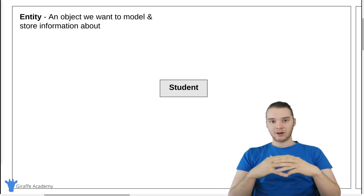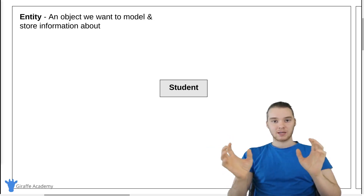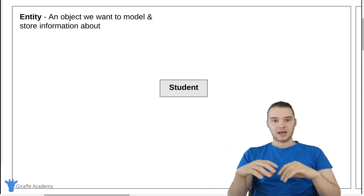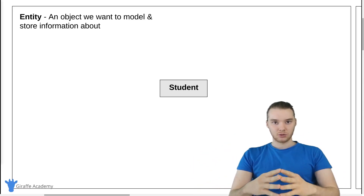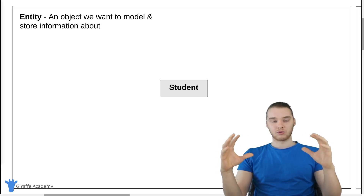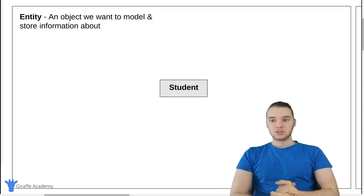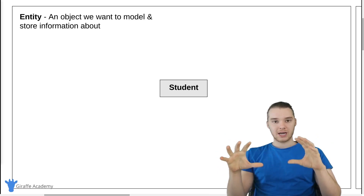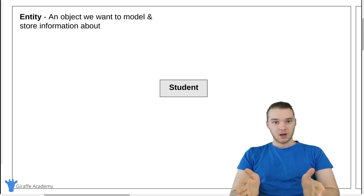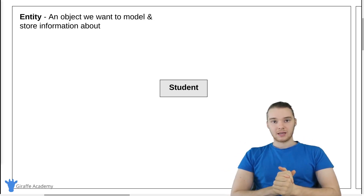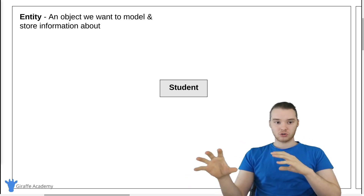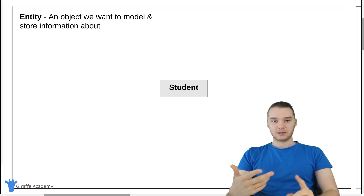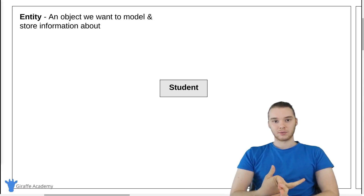So an ER diagram is basically just a little diagram that consists of different shapes and symbols and text, and it all kind of gets combined together to end up defining a relationship model. So without further ado, let's get started. I'm going to show you guys all the different basic parts of an ER diagram, and we'll kind of construct our own ER diagram, which will give you guys an idea of all the different symbols we're going to use.